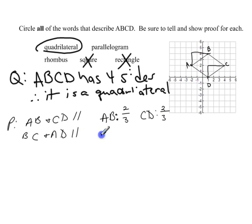Now we want to show BC and AD. For BC, to get from C to B, we rise 2 but we run 3 in the negative direction, so it's going to be negative 2 thirds. And then for AD, to get from D to A, we rise 2 and we run 3 in the negative direction, so that's negative 2 thirds also.